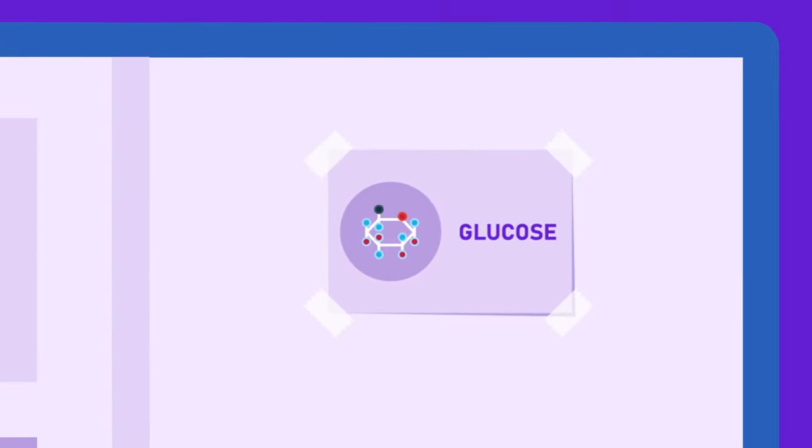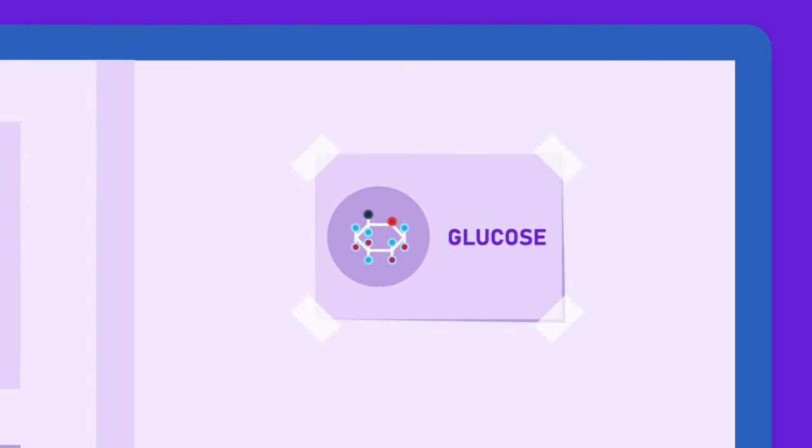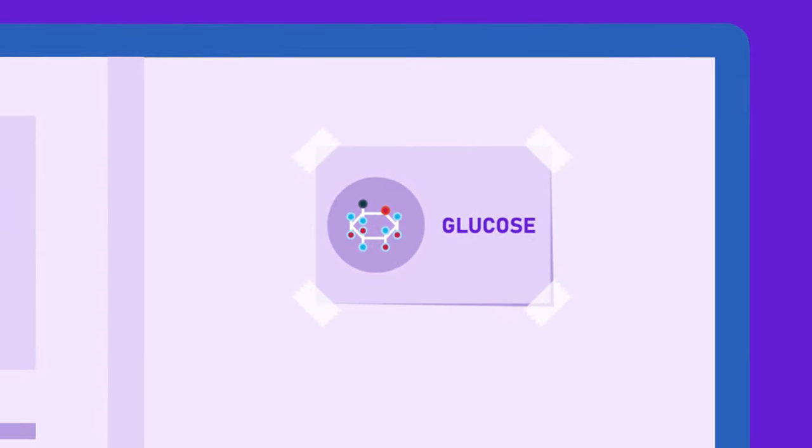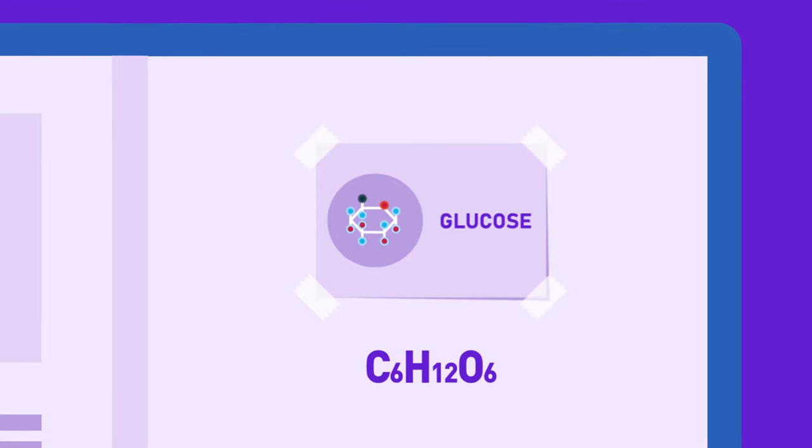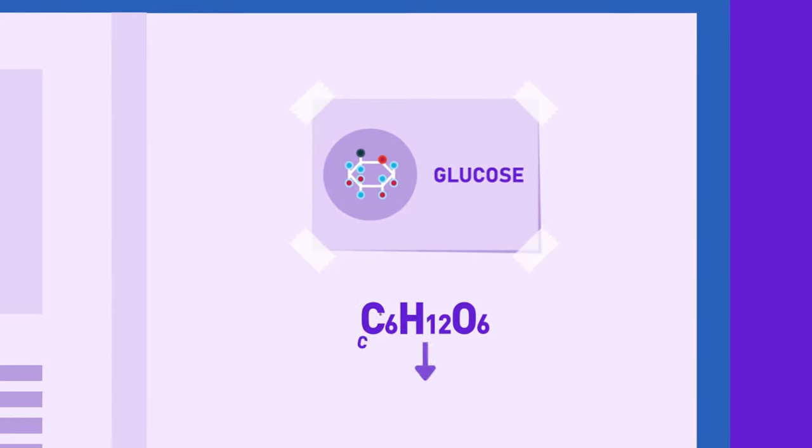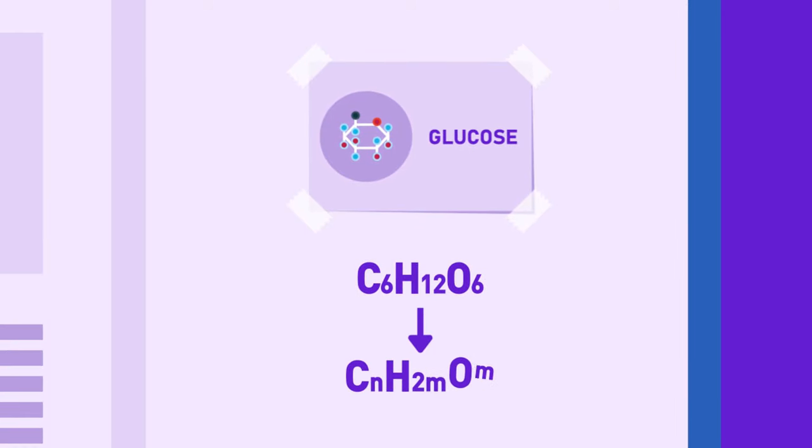The sugar glucose is one of the simplest forms of sugars and has the chemical formula C6H12O6. The generalized formula for carbohydrates is CNH2MOM. In the case of glucose, N and M is equal to 6.